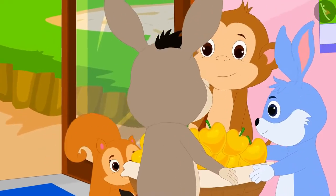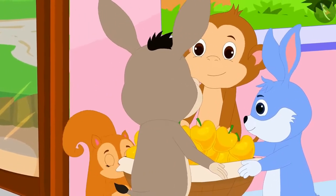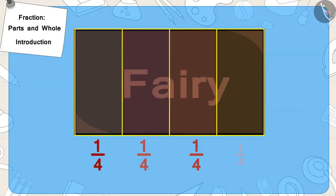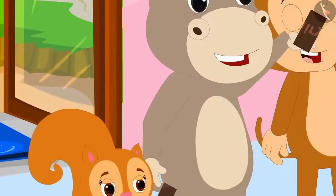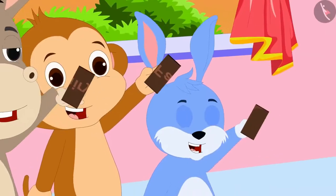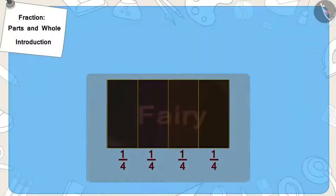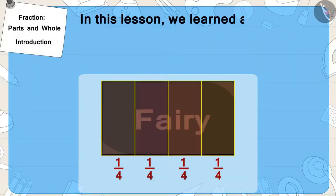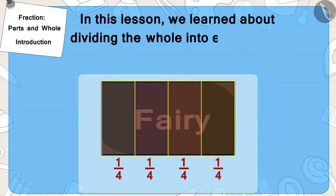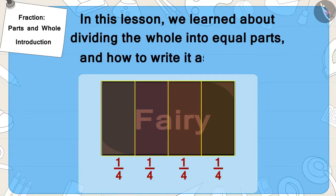Finally, the four of them reached Appu's house with the mango basket. Appu gave Bunny such a chocolate. He divided the chocolates into four equal parts, as found in the answer by you, and gave each of them one part of it. Children, in this lesson, we learned about dividing the whole into equal parts and how to write it as a fraction.